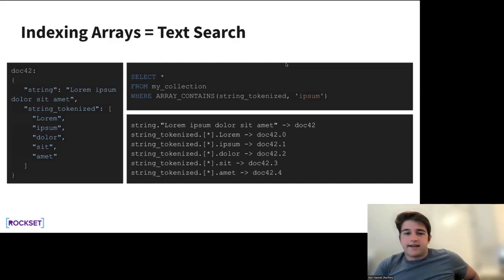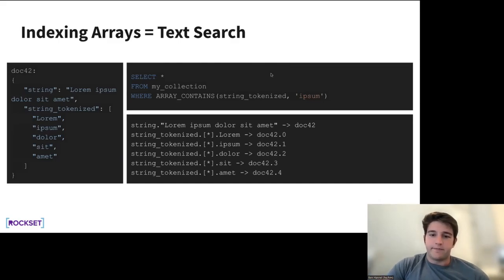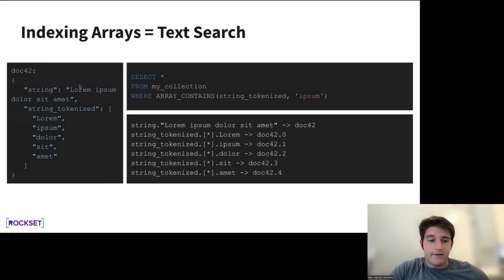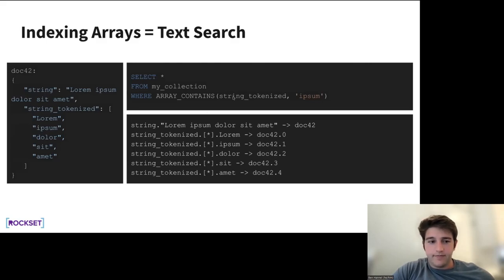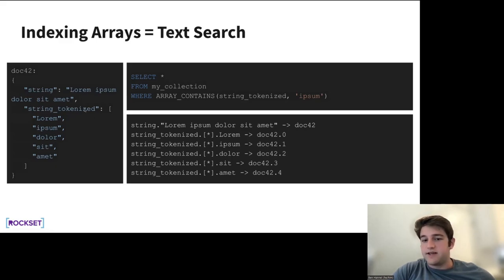Another benefit of indexing array data: you get text search for free. If you tokenize your data at ingest time — Rockset provides tools for this — and turn a string into an array of word tokens, you can use array_contains or our specialized text search syntax to perform fast indexed text search. You can say 'array contains each of these three words, and they should be within this proximity,' and you get fast index-based text search.